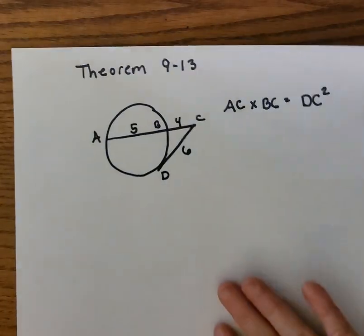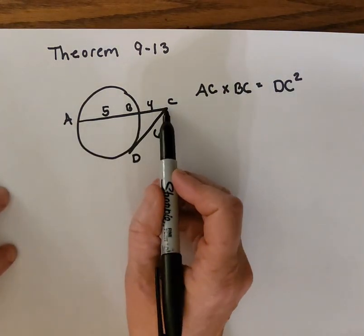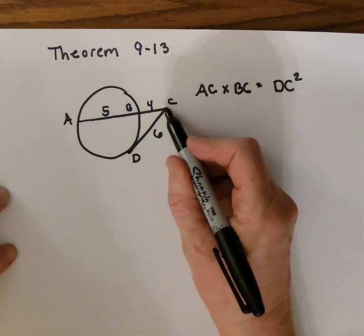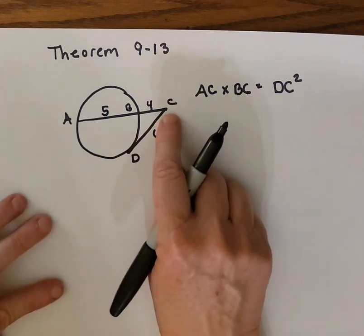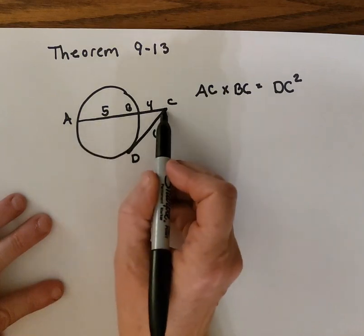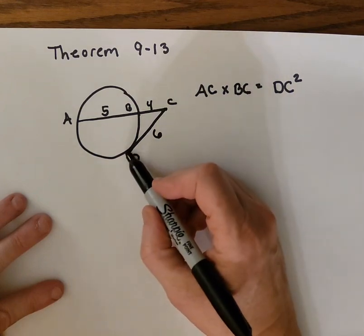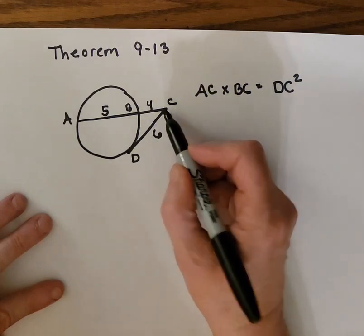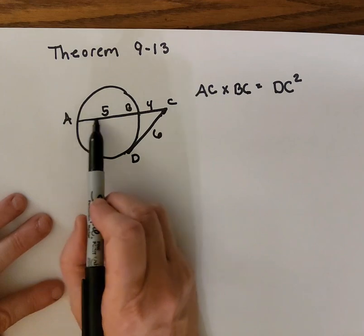We'll practice that in a moment. Theorem 9-13 is similar, but this time you have a secant segment and just a tangent — a segment that touches the circle at only one point — and they again meet outside of the circle. When this happens, the entire secant segment AC multiplied by the external part BC is equal to the tangent squared, meaning the tangent segment multiplied by itself, because the whole tangent is outside of the circle.